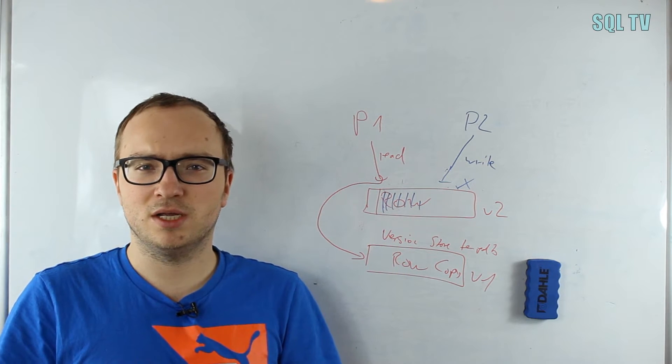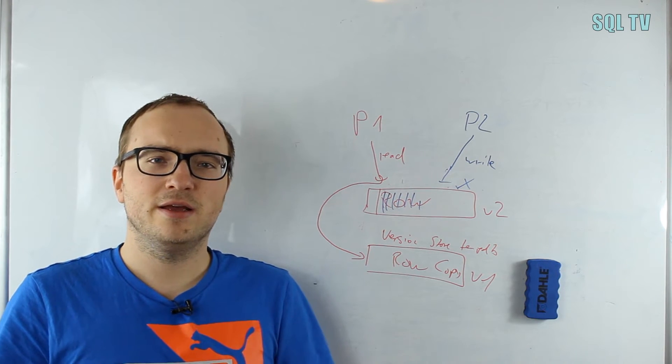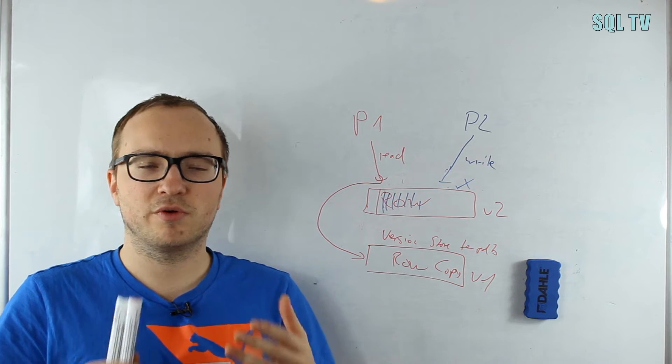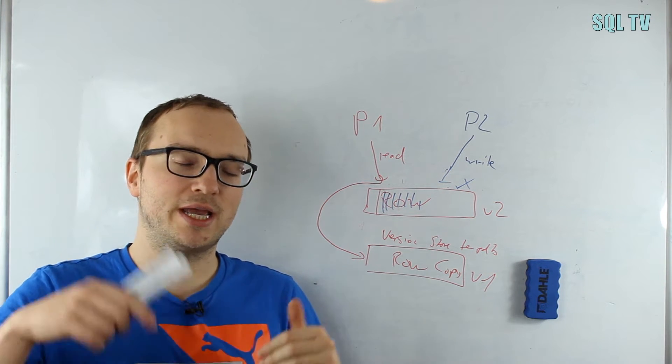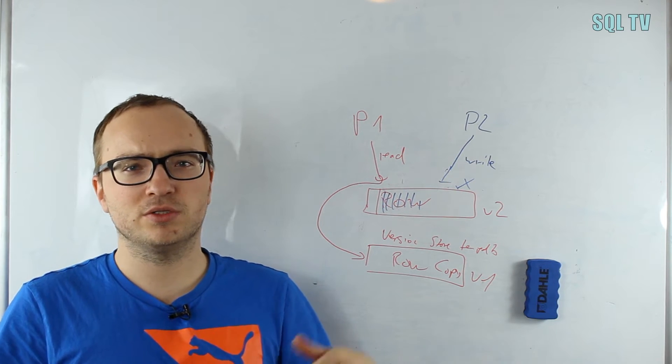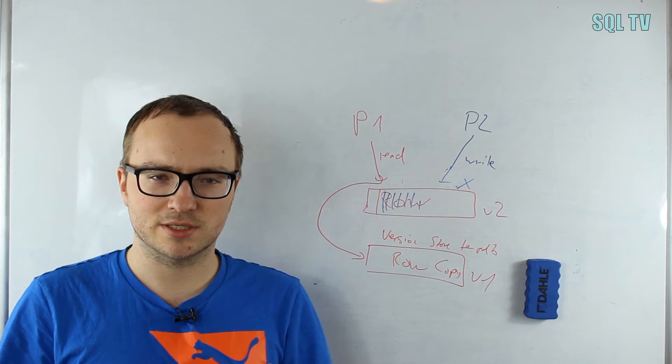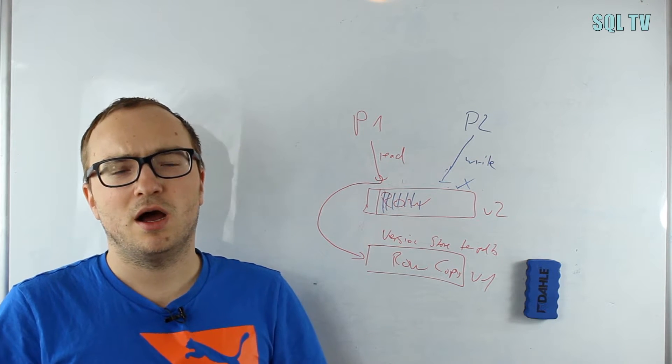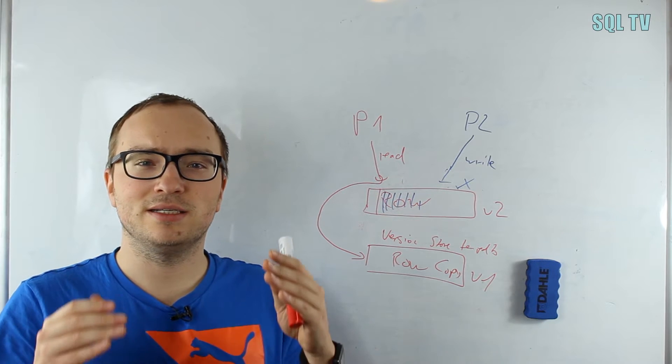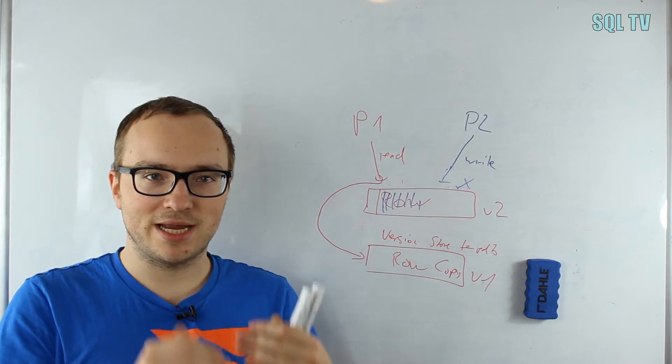Multiple statements in it—when I say readers block writers, I actually mean the transaction that reads blocks the transaction that writes. We're not talking about single statements; we are always talking about the transaction. This is important because most locks are held until the end of the transaction, so it is not until the end of the statement but until the end of the transaction.